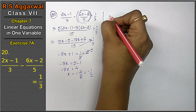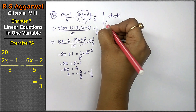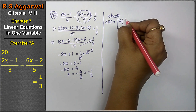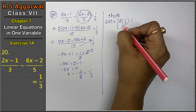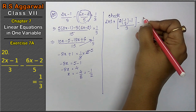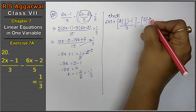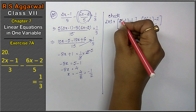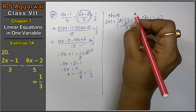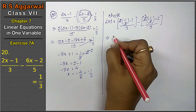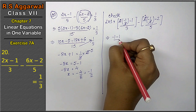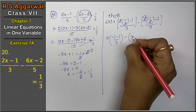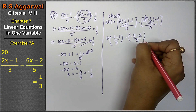Let's check. Left hand side: substitute x = minus 1 upon 2. We get: 2 into (minus 1 upon 2) minus 1, upon 3, minus 6 into (minus 1 upon 2) minus 2, upon 5. The 2s cancel, giving minus 1 minus 1 upon 3, minus 3 into minus 1 is minus 3, minus 2 upon 5.